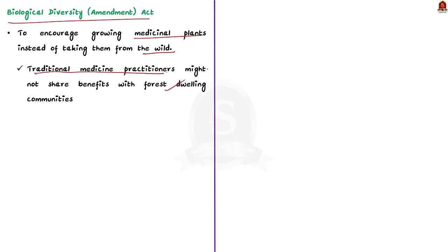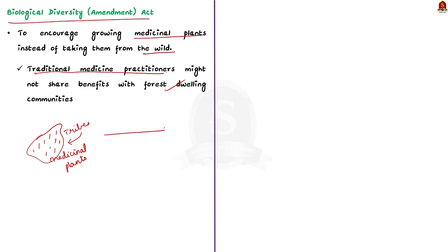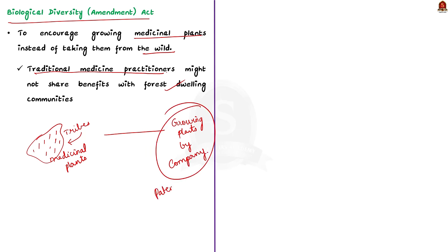To understand this with an example: imagine a remote village in India where generations of indigenous people have cultivated and used a particular medicinal plant passed down through oral traditions. The recent amendment to the Biodiversity Act aims to reduce over-exploitation of wild medicinal plants and encourages their cultivation. However, a pharmaceutical company aware of the plant's medicinal properties starts cultivating it on a large scale, develops it, and gets a patent for medicines extracted from it. Unfortunately, the profits from using this traditional medicinal plant will not be shared with the indigenous communities — a major drawback of the recent amendment.